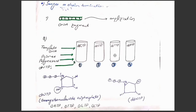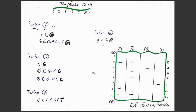In tube 3, we have modified dideoxy thymine triphosphate. In this tube, normal cytosine attaches to G, normal guanine attaches to C, normal adenine attaches, normal cytosine attaches, normal cytosine attaches, but to A there will be attachment of the modified thymine. When the modified thymine is attached, we will get a 6-nucleotide sequence and further no elongation will occur.